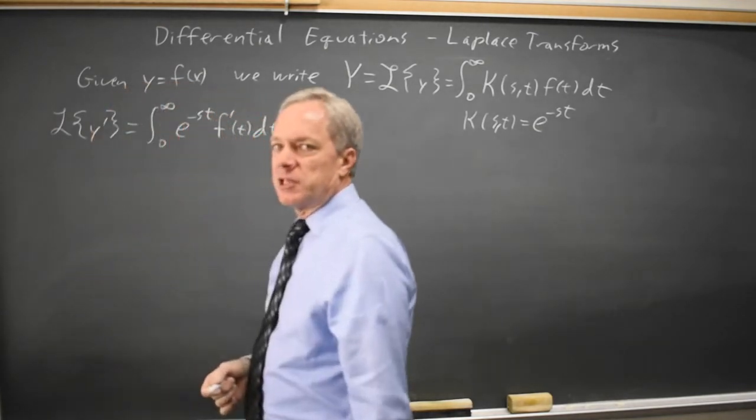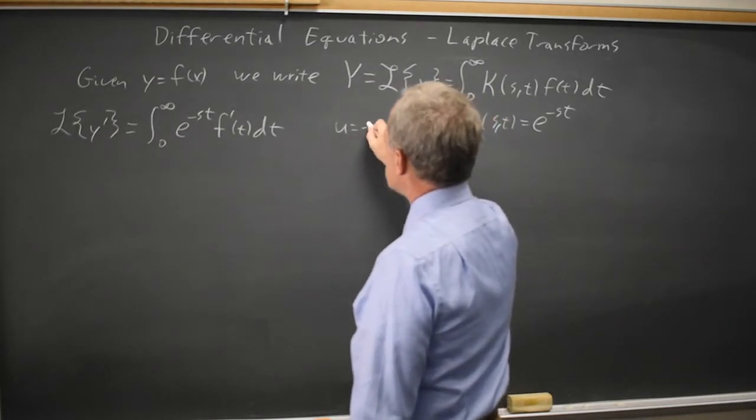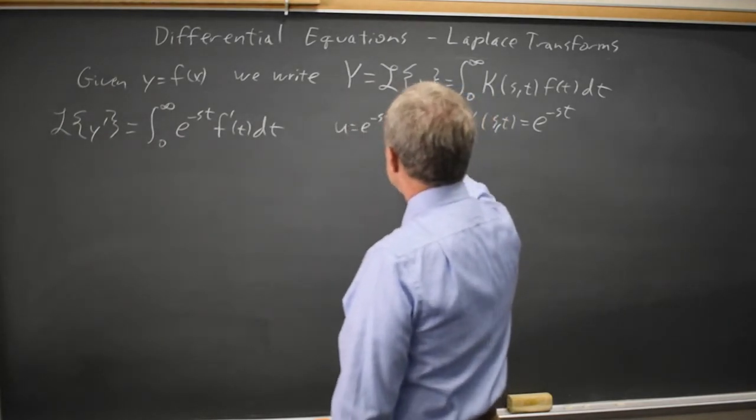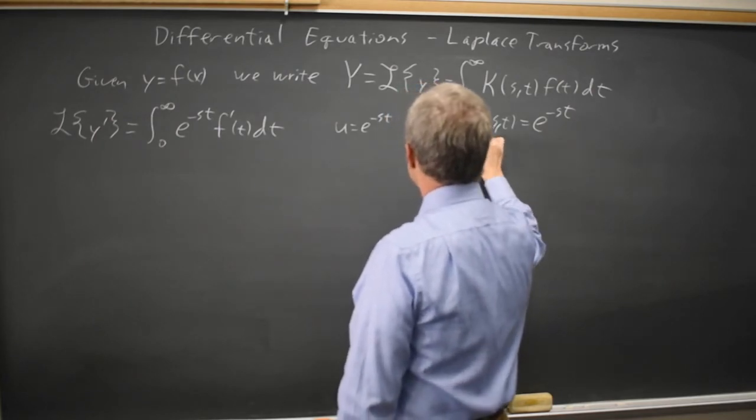And that can be integrated using parts. If I write u equals e to the negative st, dv equals f prime of t, dt